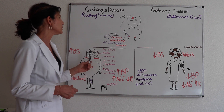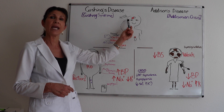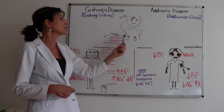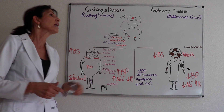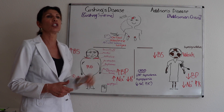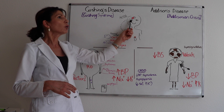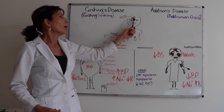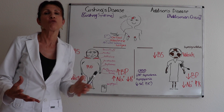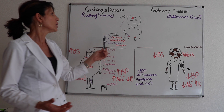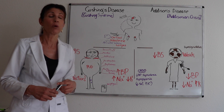Cushing's disease is when there is a hypersecretion of ACTH from the anterior pituitary, and therefore a hypersecretion of cortisol from the adrenal cortex. Cushing's disease specifically refers to when a tumor or similar cause is prompting that hypersecretion of ACTH. Cushing's syndrome, on the other hand — since a syndrome means a collection of symptoms — refers to elevated hormone levels from any other source.